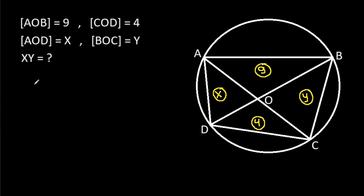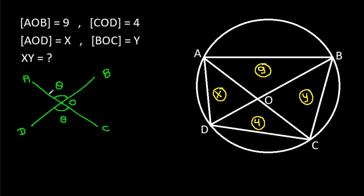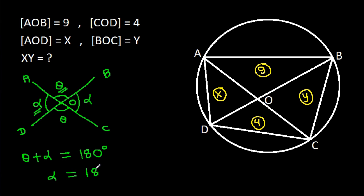Here AC and BD are intersecting at O, so opposite angles will be equal. At point O, theta plus alpha equals 180 degrees, so alpha equals 180 degrees minus theta. If this angle is theta, then the opposite angle is also theta, and the other two angles are each 180 degrees minus theta.